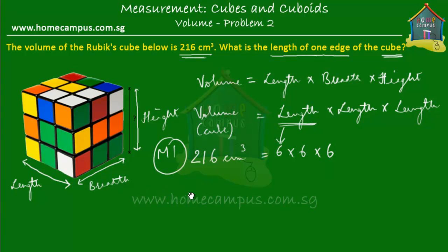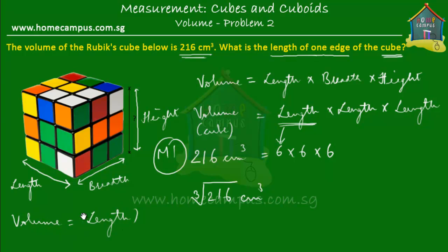If you're allowed to use a calculator, then it's really simple. All you have to do is find the cube root of 216 cm³. When volume equals length times length times length, we can also write that as volume equals length to the power of three. This means that length is then equal to the cube root of volume.